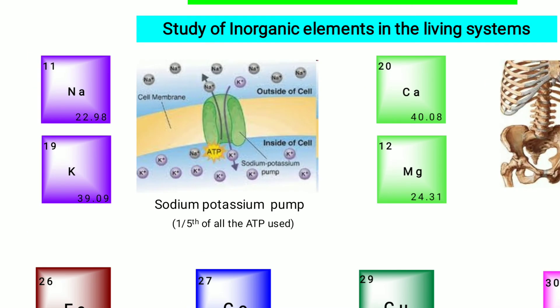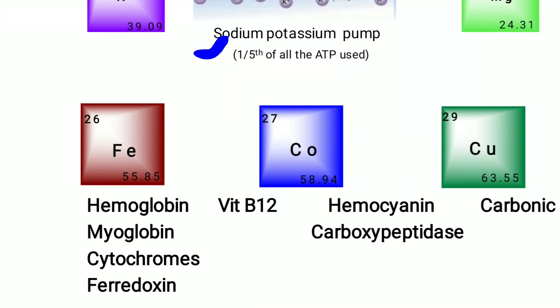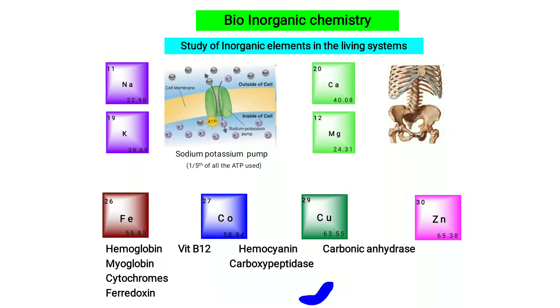Metal ions also maintain osmotic pressure, pH, and regulatory action in our body — for example, the sodium-potassium pump. As you can see in the diagram, sodium and potassium regulate pH, osmotic pressure, and blood pressure inside and outside the cell. Fe is very important in hemoglobin, myoglobin, cytochrome, and peroxidase. We will learn all these concepts in detail. This chart of metal functions is very important for your MCQ examinations.